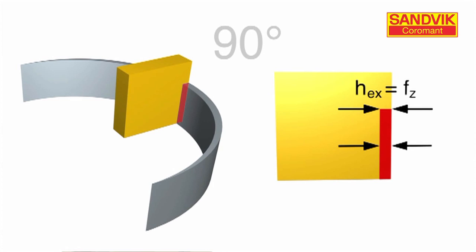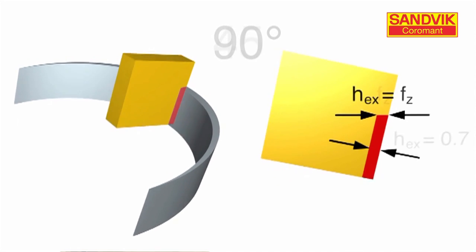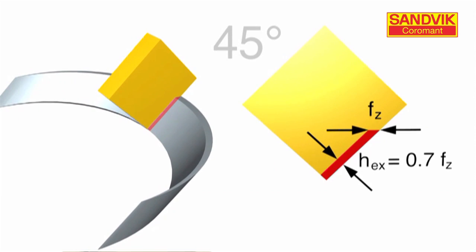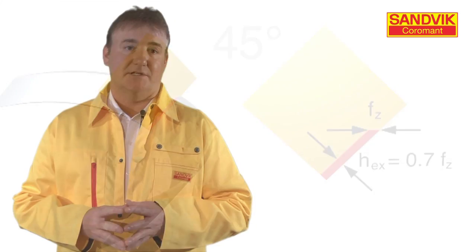With a square shoulder cutter, your programmed feed rate is equal to your actual chip thickness. The rule of thumb regarding lead angles on milling cutters is: as the lead angle decreases, so does the chip thickness, and because of this you have the opportunity to increase your feed rates.